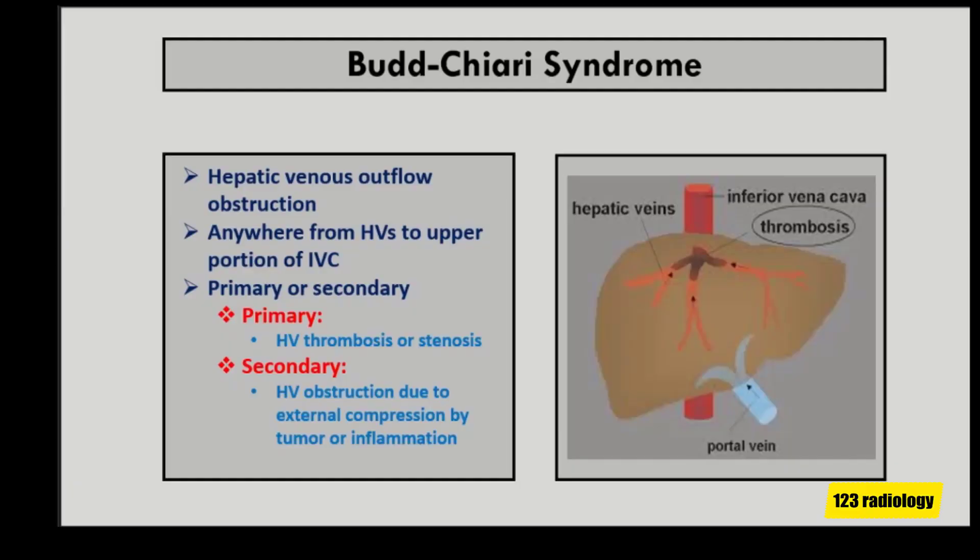Budd-Chiari syndrome is a rare cause of portal hypertension and liver failure. The disease is characterized by impaired hepatic venous drainage. The causative lesion can be located at any portion, from the hepatic veins to the upper portion of the inferior vena cava.